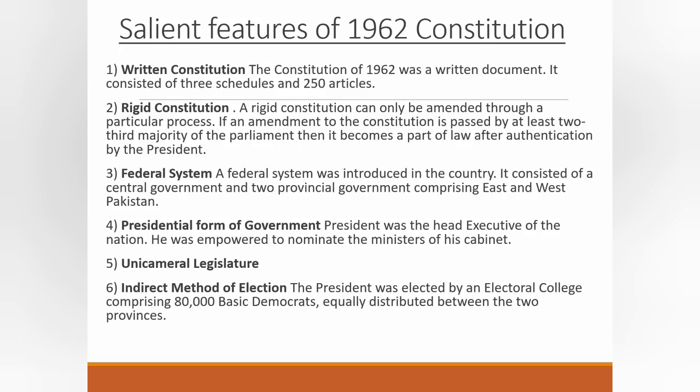Number four — presidential form of government: the president was the chief executive of the nation and had the power to nominate the ministers of his cabinet. Number five — unicameral legislature, meaning a single-chamber parliament rather than a bicameral two-chamber system. Number six — indirect method of election: the president was elected by the electoral college comprising 80,000 basic democrats, equally distributed between the two provinces.